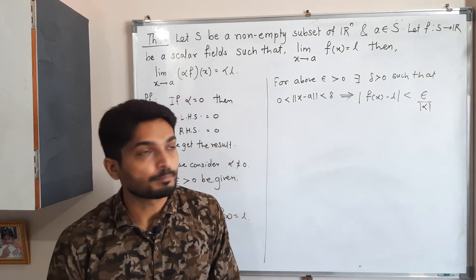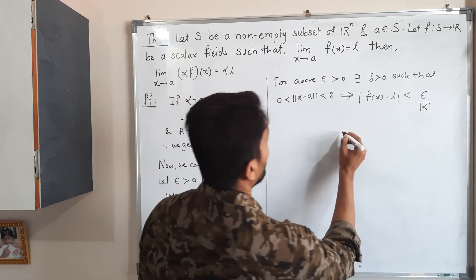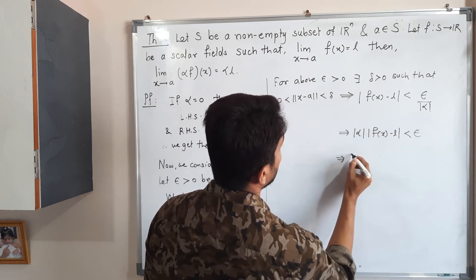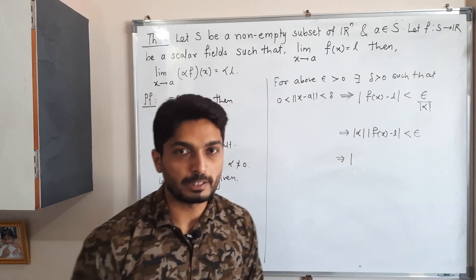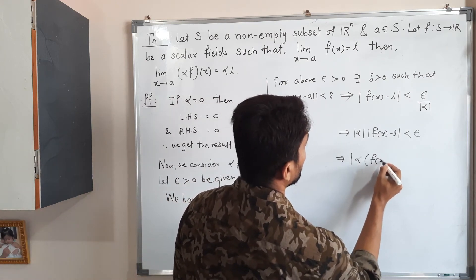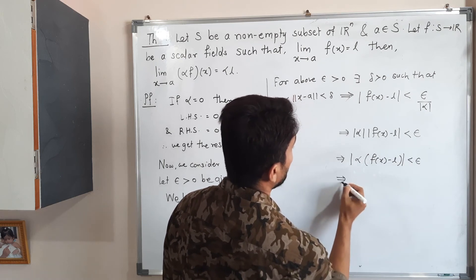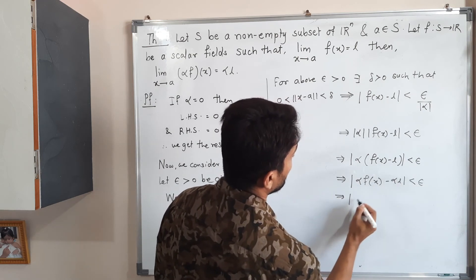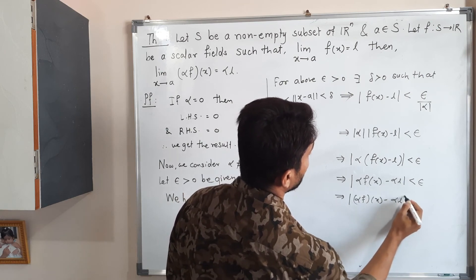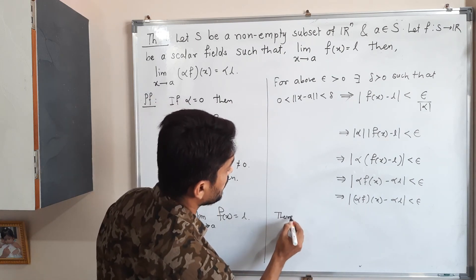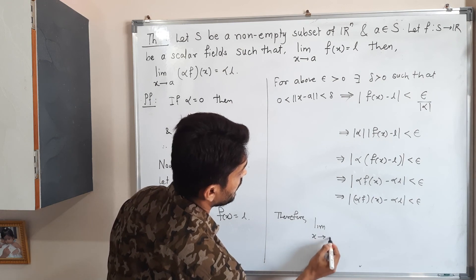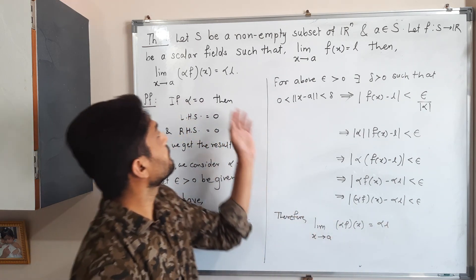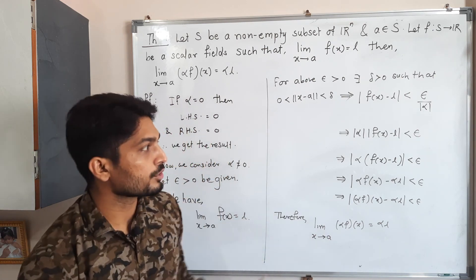Shifting |alpha| to the other side gives |alpha|·|f(x) − l| less than epsilon, which equals |alpha·f(x) − alpha·l| less than epsilon. Therefore, by definition, the limit of alpha·f(x) as x tends to a equals alpha·l. In this way, the result is proved.